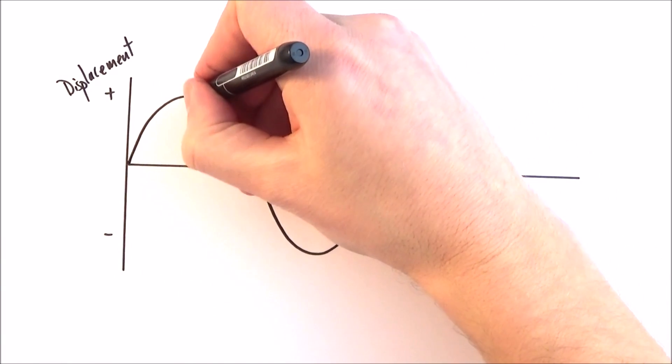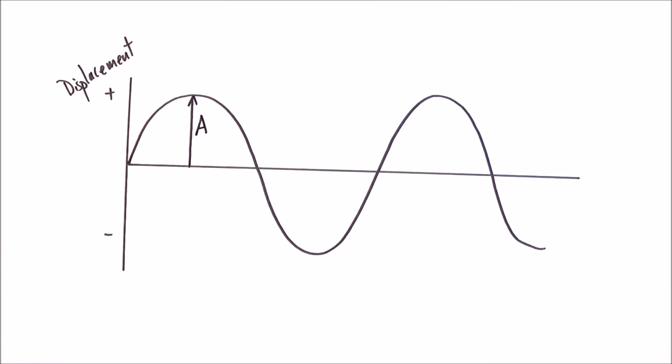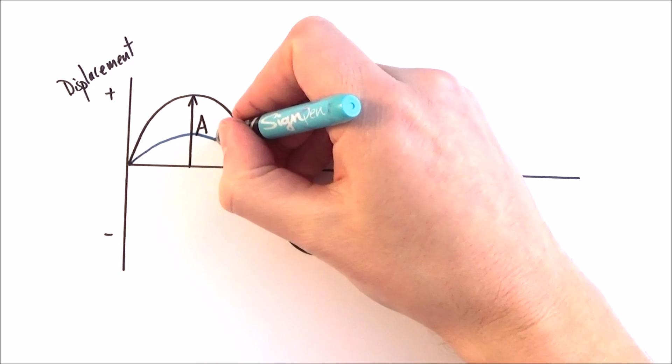Here we have a wave of a certain amplitude that I'm going to call A. And if we consider a very similar wave that has the same wavelength, but it may be a different amplitude, so maybe half the amplitude.